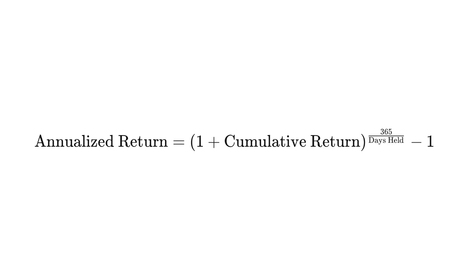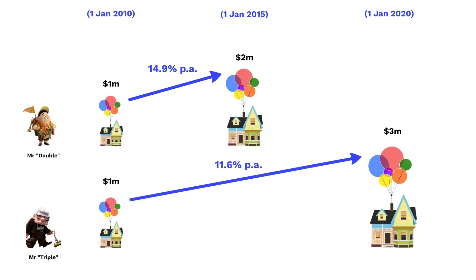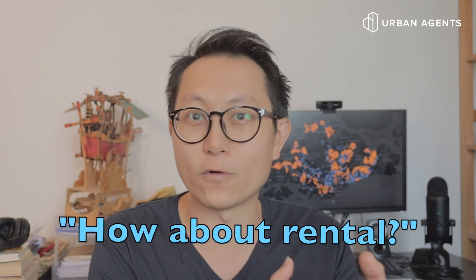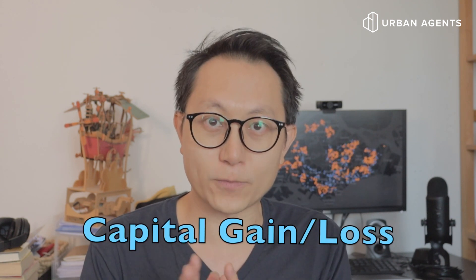If you run through the math with the formula, Mr. Double actually comes out on top on an annualized basis at 14.9% per annum, whereas Mr. Triple, even though he tripled his money, only got 11.6% per annum — lower than Mr. Double. Some of you may ask about rental income both would have received while holding the property — great question, we'll address it in a later episode. For now, let's look at annualized return from a purely capital gain/loss perspective.